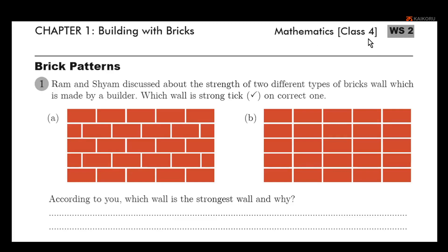In the class, we will talk about worksheet number 2 of chapter number 1 — building with bricks — how to solve the bricks. Tom and Shant discussed about the strength of two different types of brick walls made by a builder. Which wall is strong? Tick on the correct one. The two of them discussed.